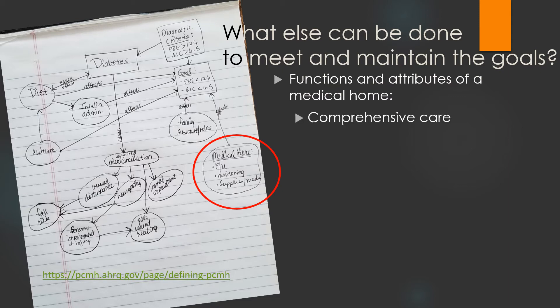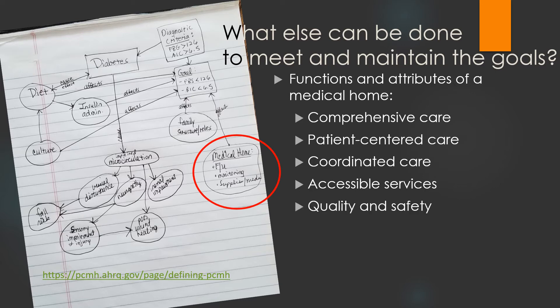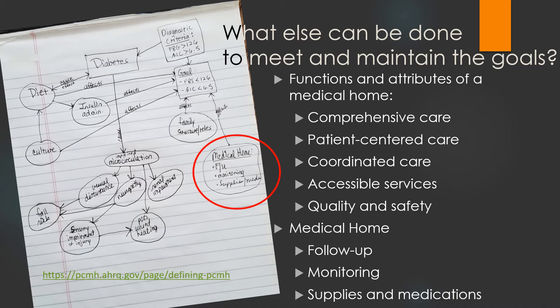These core functions are comprehensive care, meeting the large majority of each patient's physical and mental health care needs, including prevention and wellness, acute care and chronic care; patient-centered that is relationship-based with an orientation towards the whole person; coordinated care across all elements of the broader health care system, including specialty care, hospitals, home health care and community services and supports; accessible services providing around-the-clock telephone or electronic access; and quality and safety demonstrated through evidence-based medicine and clinical decision support tools. So a medical home offers follow-up, monitoring and supplies and medications.